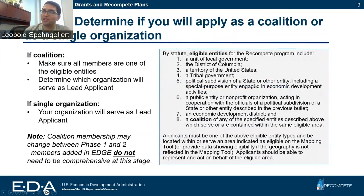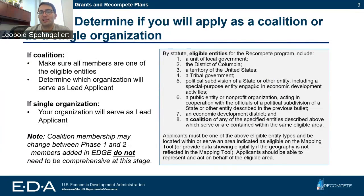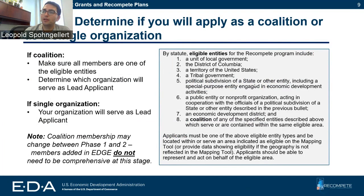Once you've decided that you're going to apply, you need to determine if you are going to apply as a coalition or as a single organization. Unlike the TechHubs program, which is also out right now, we are not requiring folks for Recompete to apply as a coalition, but you are free to apply as a coalition. However, if you are going to apply as a coalition, please make sure all members of your coalition are one of our eligible entities.